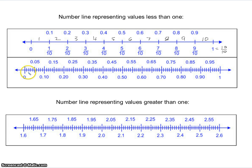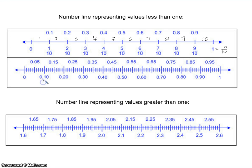So each marking is a hundredth. Just like before, these values could be replaced with fractions. This .10 could be written as ten hundredths, because that's how you pronounce that decimal. So that would be ten hundredths, which would make this one twenty hundredths.